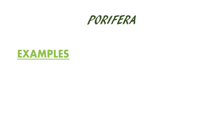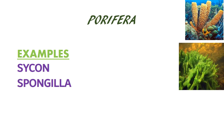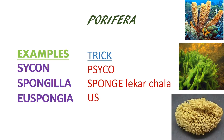The first phylum is Porifera. The examples given in NCERT are Psycon, Spongilla, and Euspongia. The trick is very simple: 'Psycho Sponch Lekar Chala US' — a psycho guy is taking a sponge with him. From 'Psycho' it's Psycon, from 'Sponch' it's Spongilla, and from 'US' it's Euspongia — very similar words.